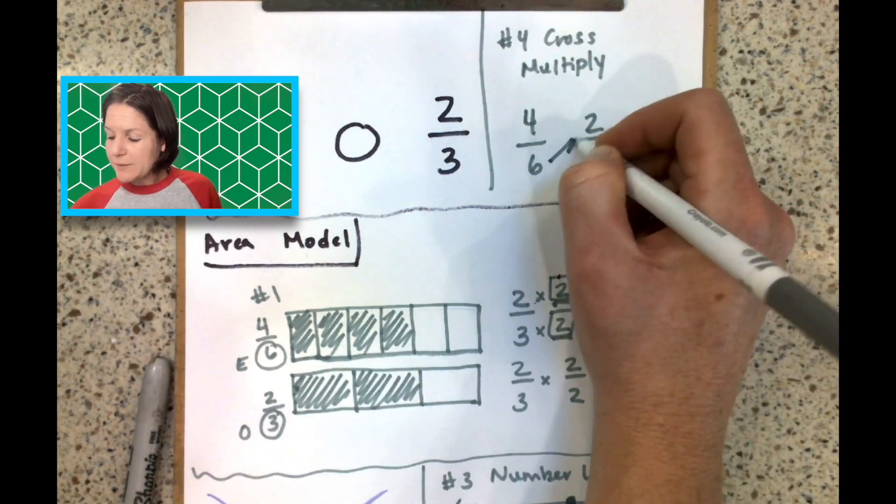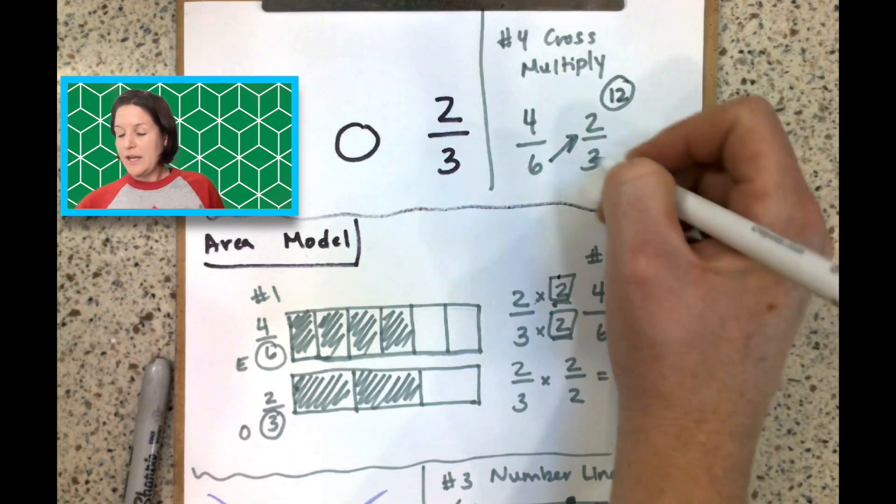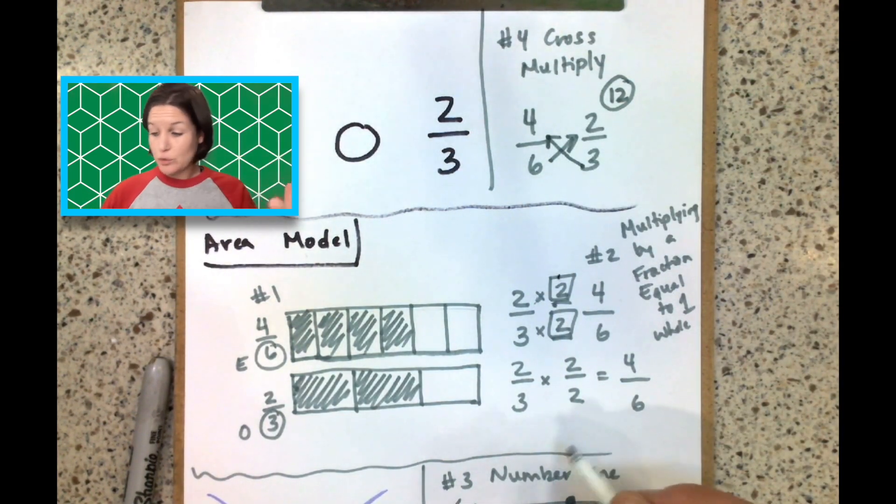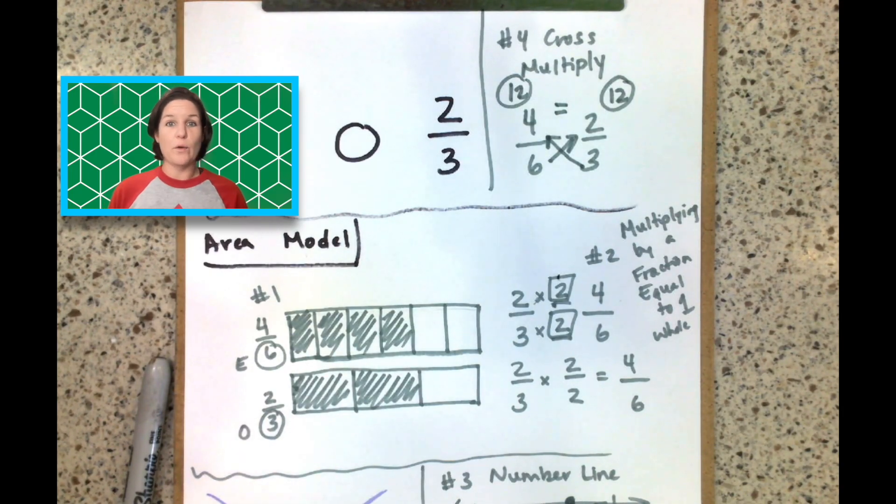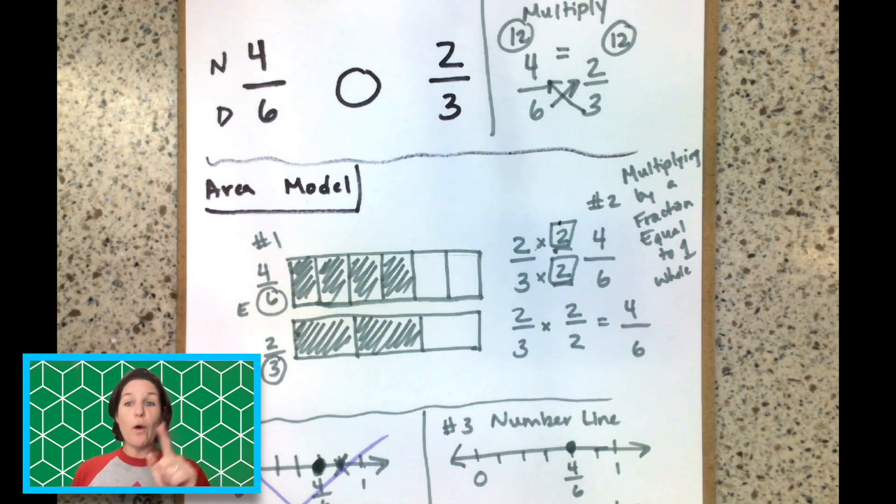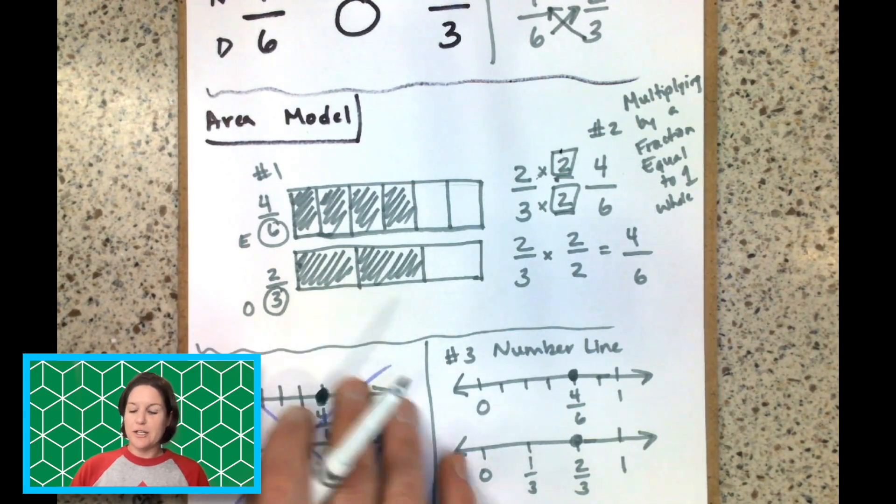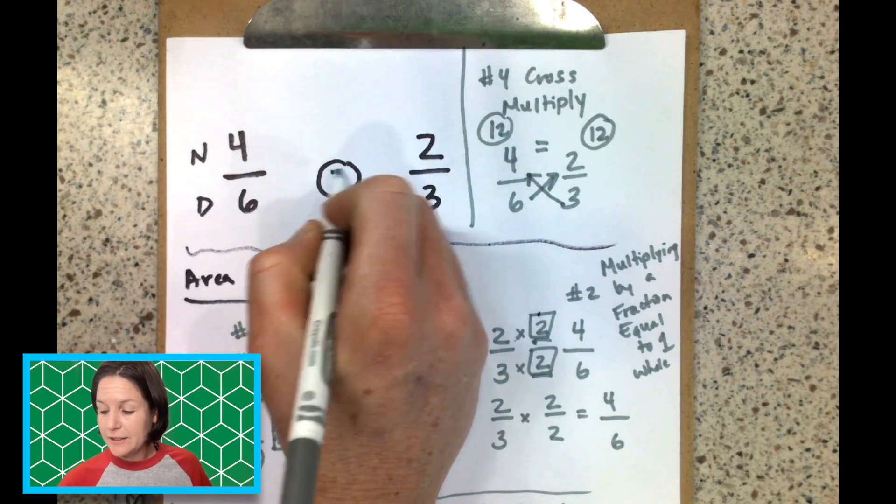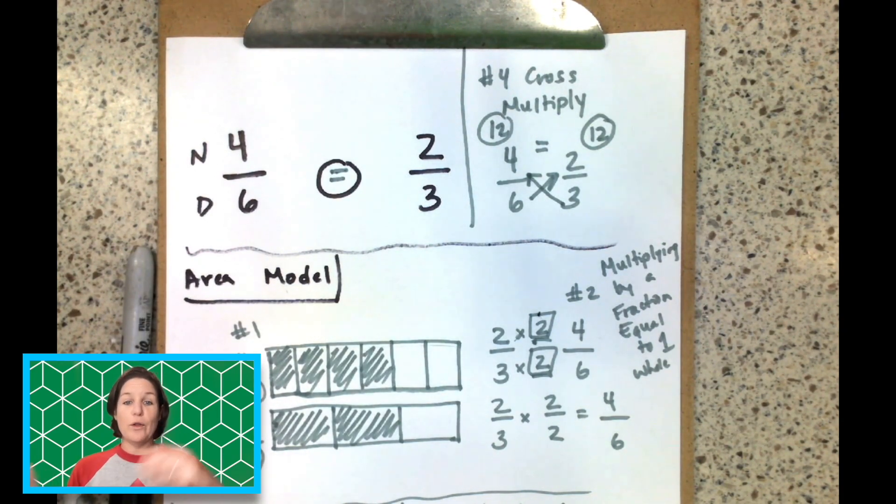So if I was like, man, those look equal, let me cross multiply. You take six times two, which equals 12. And then you go here, three times four equals 12. And look, the products are equal. Therefore the fractions are equal. We know it for sure. Got the area model. We had multiplying by a fraction that's equal to one whole. We had the number line. Just ignore the one that I botched down there. I'm so sorry. And we had cross multiplying up there. So don't forget to lock it in that they are equal fractions. And that is how you can determine if the fractions are equal or not.